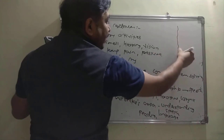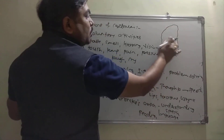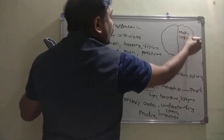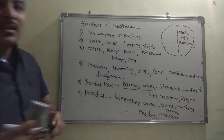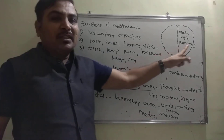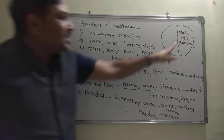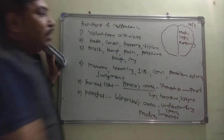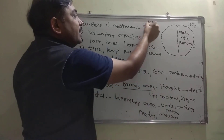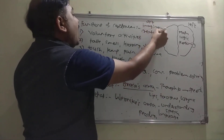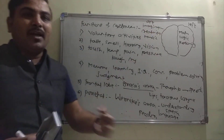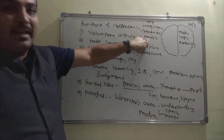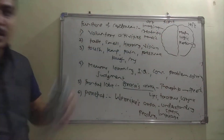The cerebrum has two hemispheres — right and left. The left hemisphere is the center for mathematics, logic, and reasoning, including aptitude tests in competitive exams. The right hemisphere is the center for art, imagination, creativity, and awareness of music.